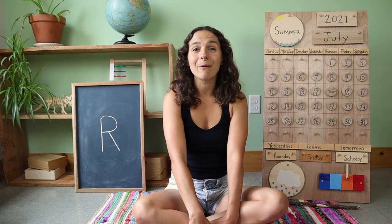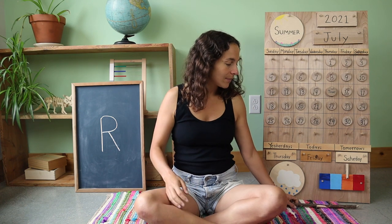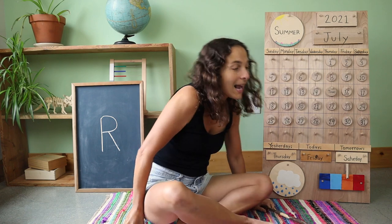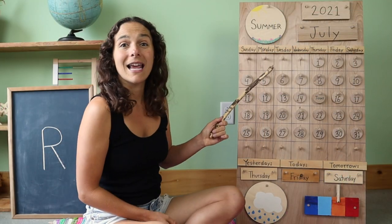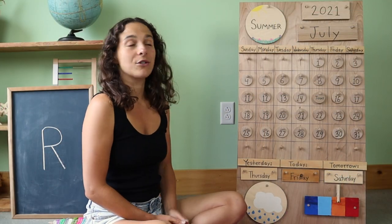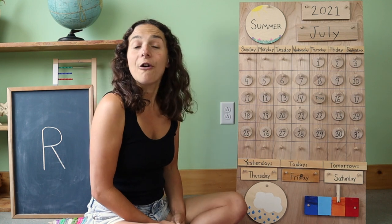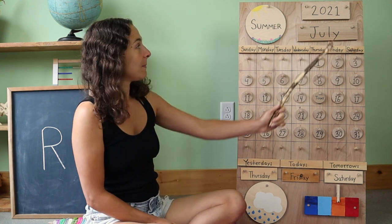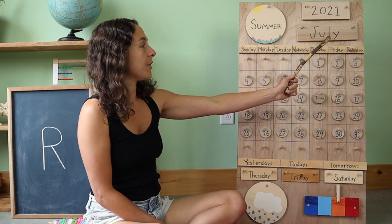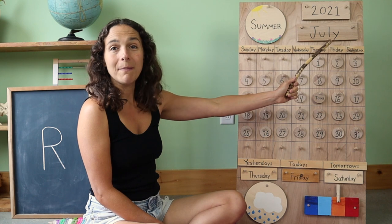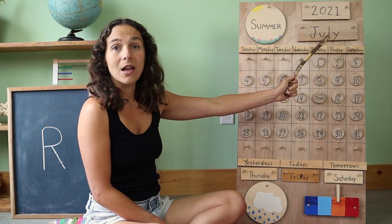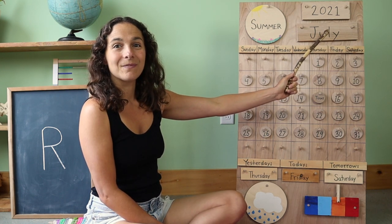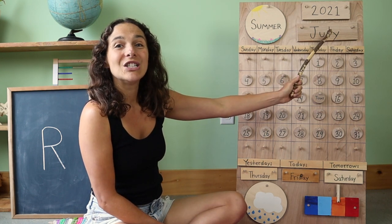And now we're ready for circle time. Let me grab my pointing stick, and I'm going to turn over to the calendar and weather chart that I have right here. First, let's go over the date. We'll start off with the month, which is right up here. Do you know what the month is? July.